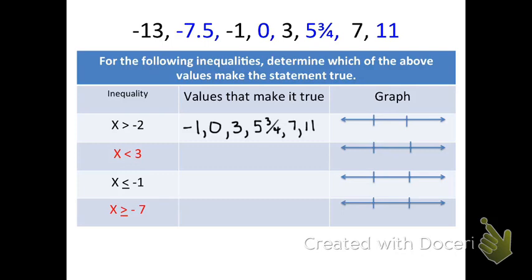When we go to graph it, we're going to put two hash marks. One hash mark is the value in the inequality, which is negative 2, and the other is always 0. Negative 2 goes on the left side since we're on a number line. Since it's greater than, we use an open circle. The values negative 1, 0, 3, and the others in the solution set are all to the right of negative 2, so the arrow goes to the right.